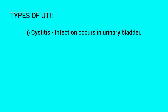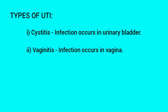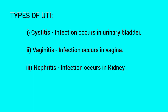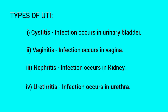Let's see the types of UTI. Cystitis, where the infection occurs in the urinary bladder. Vaginitis, where the infection occurs in the vagina. Nephritis, where the infection occurs in the kidney. Urethritis, where the infection occurs in the urethra.